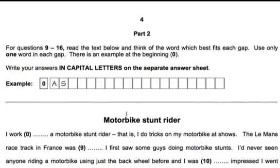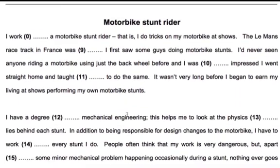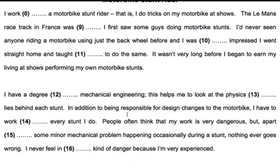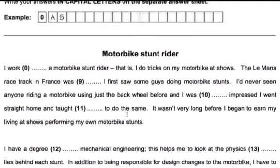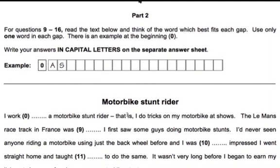If we turn to the FCE handbook you can see the Open Cloze consists of a short text with 8 gaps — 9 gaps including the example at the beginning. Each gap equals one word and the candidate has to complete each gap by identifying the missing word. If we look at the example we can see a gap marked zero, and above the text we can see the correct answer for zero is marked AS, as in 'I worked as a motorbike stunt rider.'